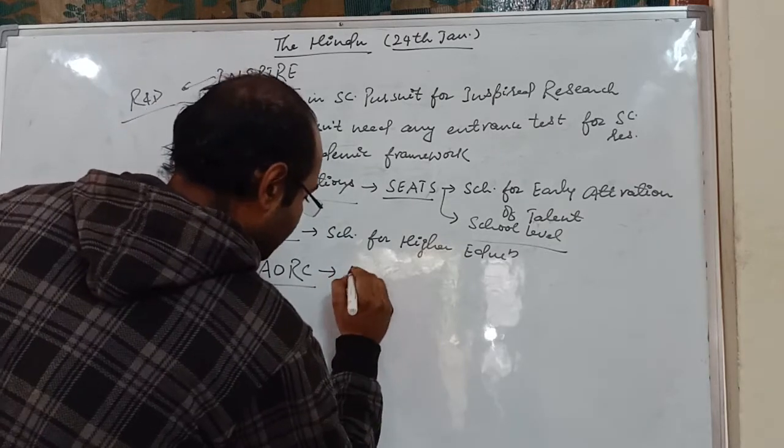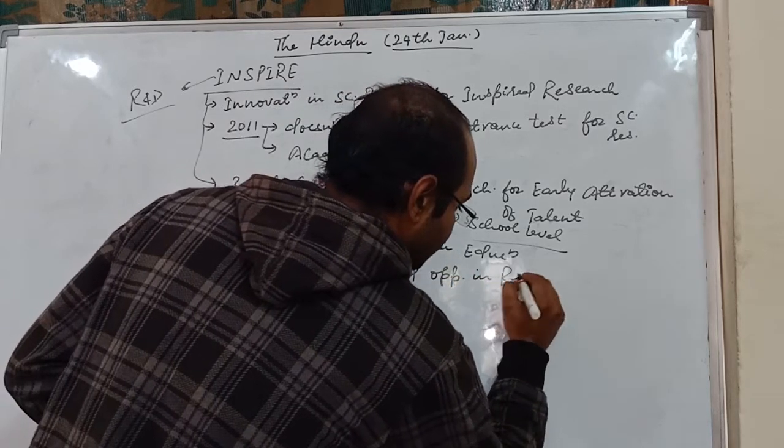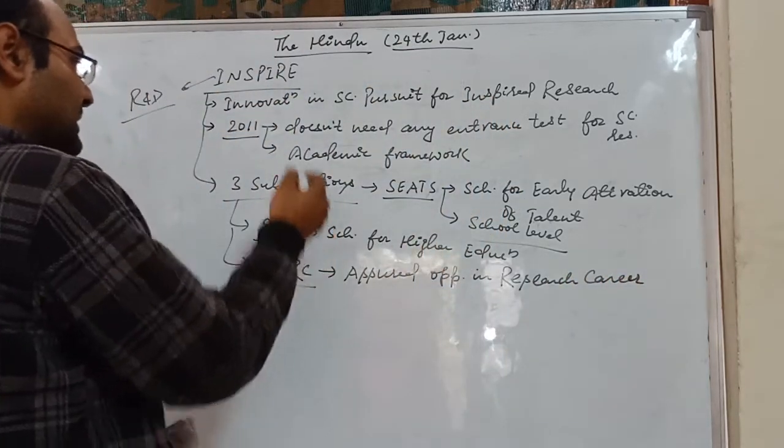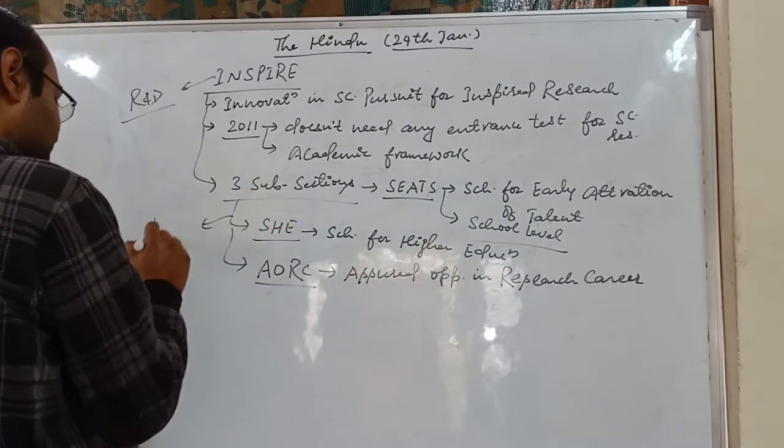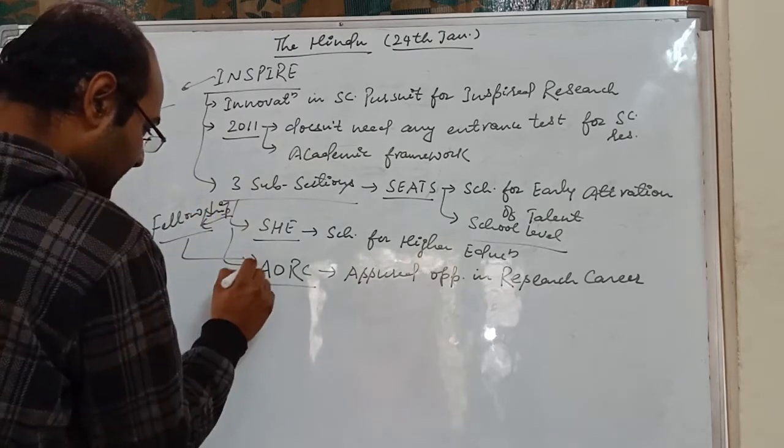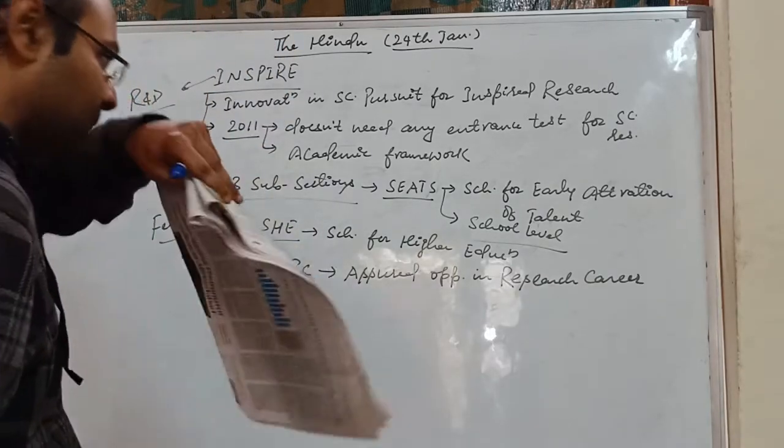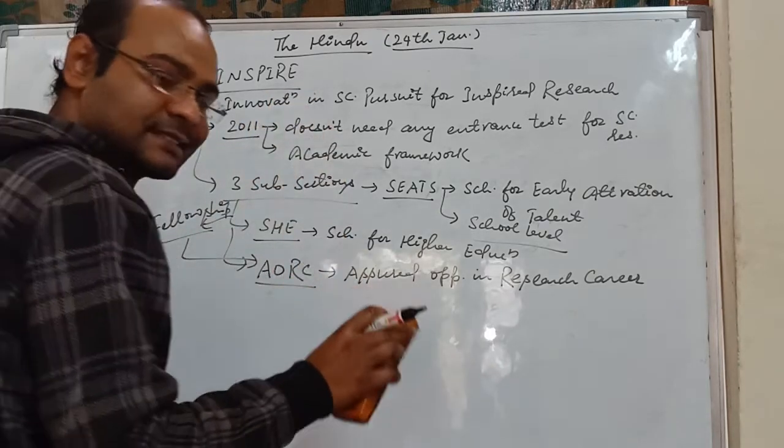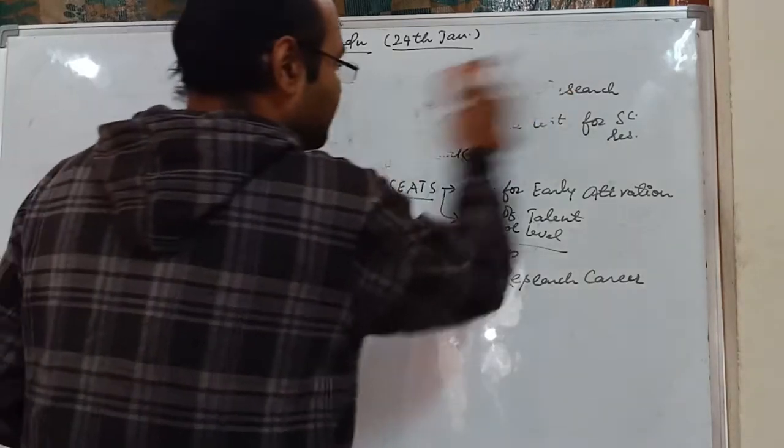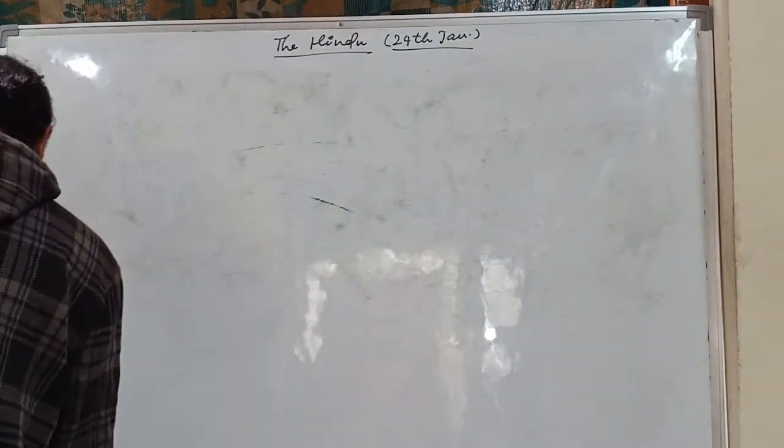And the third one is Assured Opportunity for Research Careers. So these three are the schemes under INSPIRE and based on that fellowship is given and from here based on this fellowship they are given an assured career in research field. However there are various issues regarding dispersal of funds, but this scheme was important from the examination point of view. One of the benefits of the scheme is that those fellows can be appointed as professors in higher education institutions like IITs.